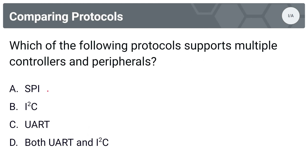Next question: which of the following protocols supports multiple controllers and peripherals? Options are A, SPI; B, I2C; C, UART; or D, both UART and I2C. The answer is I2C. SPI only supports one controller. UART only supports one controller and one peripheral. That leaves I2C, which supports multiple controllers and multiple peripherals.